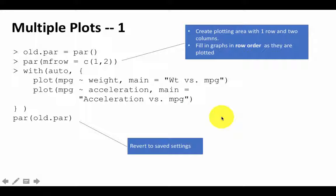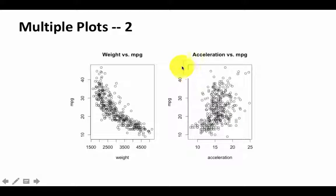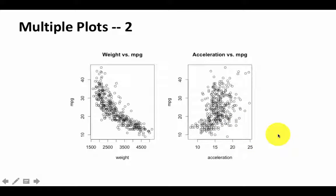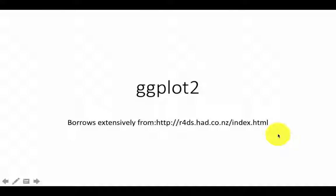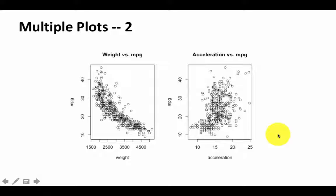So this is the way in which you would generate multiple plots — you would see these two plots side by side. That's how you do multiple plots. So that completes our discussion of base graphics. We'll now go on to discuss an advanced graphing library that R has called ggplot. We'll take a look at that soon.